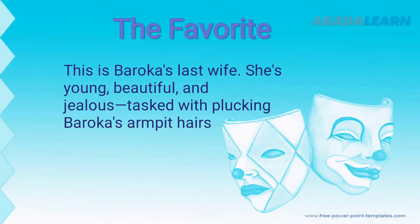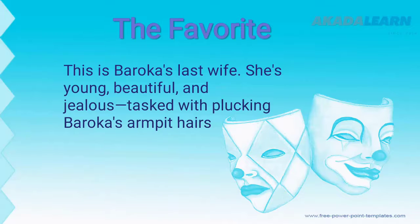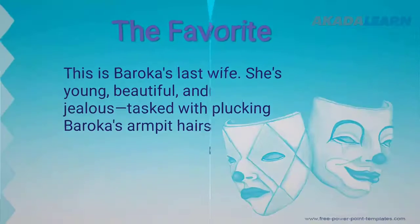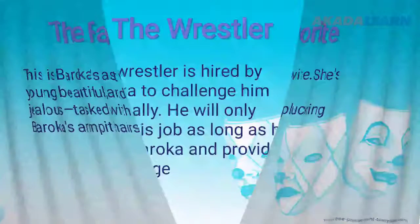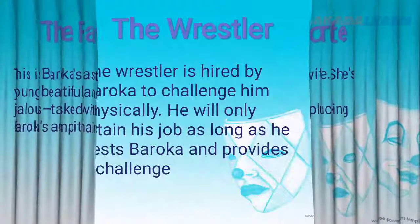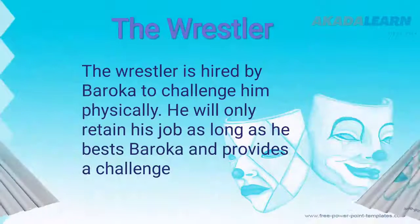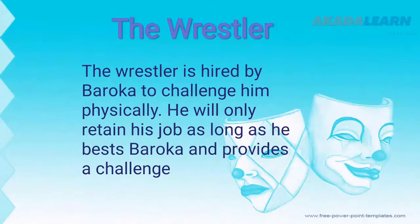Another important minor character is the Favorite. The Favorite is Baroka's wife. She is young, beautiful, and jealous, tasked with blocking Baroka's armpits. She is his favorite — the most cherished, though described as the evil wife of all of them.